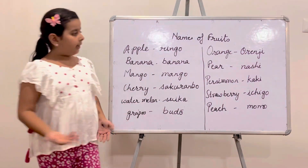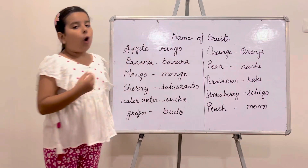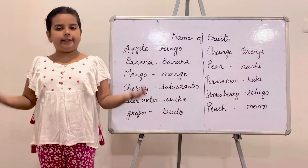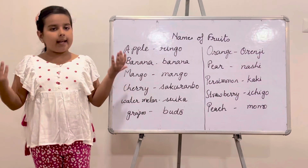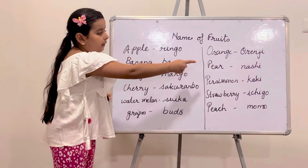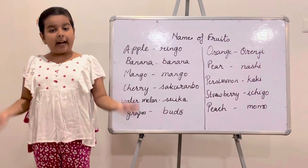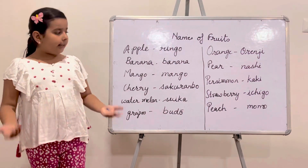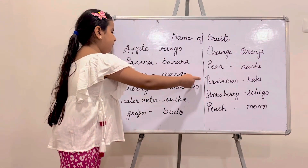The next fruit is Orange. Orange is known as Orenji. Orenji.